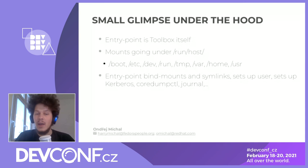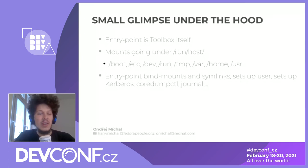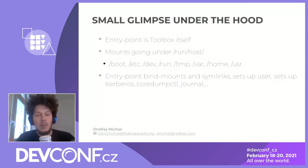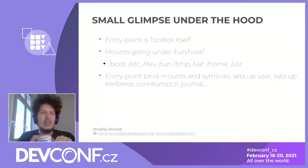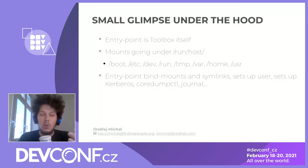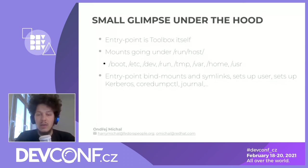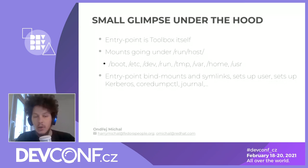That binary sits on the host machine, and when we update it, it gets updated inside the containers too. We mount parts of the host file system — /boot, /etc, /dev, and so on — under /run/host. If you want to work with them, you simply bind mount them or symlink them inside the container. Apart from that, Toolbox takes care of setting up a user: it maps your current user inside the container, and to make it more accessible, we remove the password. By default we use rootless containers, which will never have more privileges than the user creating the container. We also set up Kerberos, coredumpctl, journal, and several other things. This gives us persistence and interactivity.